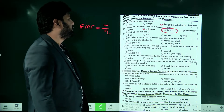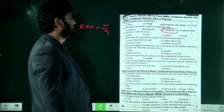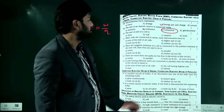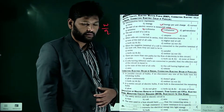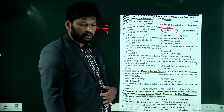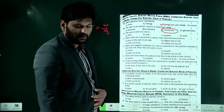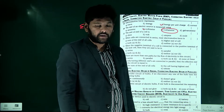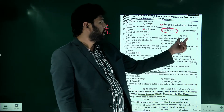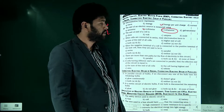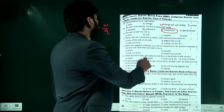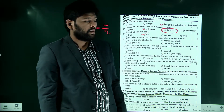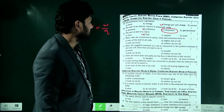The unit of EMF of a cell: dyne is a unit for force, ampere is a unit for current, and joule is a unit for energy. So volt is the unit for EMF of a cell.